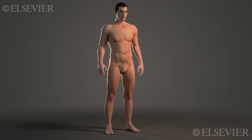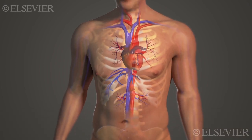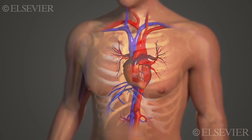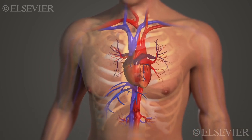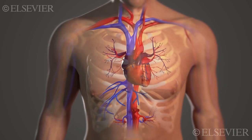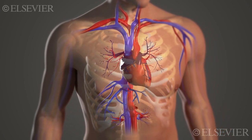The human heart consists of four chambers and four valves. The valves prevent the backflow, or regurgitation, of blood between the chambers and the great vessels.